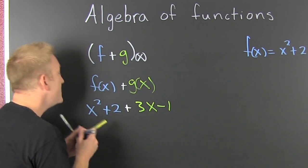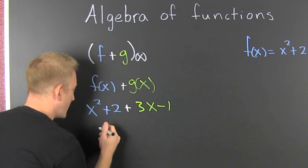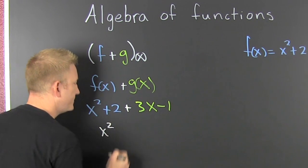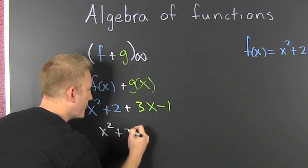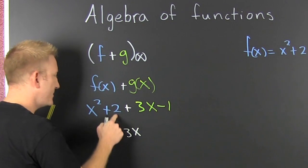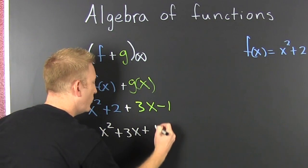So I only have one x², so I'm gonna leave them x² plus a 3x, and 2 minus 1 is 1.